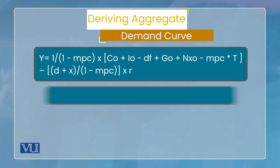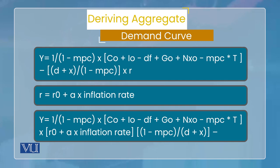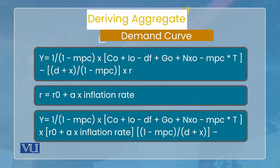It is important to remember that the aggregate demand curve is formed only from those points where there is equilibrium between the IS curve and the monetary policy curve (MPC) — that is, the IS curve which represents goods market equilibrium, and the monetary policy curve which represents the central bank's endogenous response to inflation. The point where both of these meet is where the aggregate demand curve is derived from.